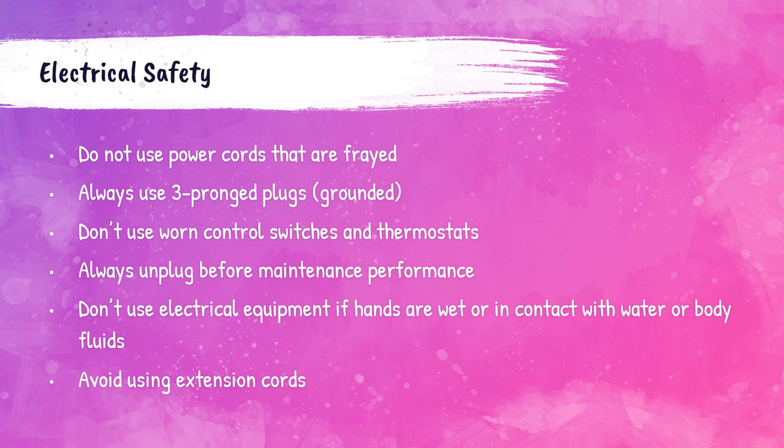Electrical hazards may be present within the laboratory. Power cords that are frayed or aging should not be used. Grounded plugs — those with three prongs — should always be used. Worn control switches or thermostats should not be used, and extension cords should be avoided. Before performing maintenance on any piece of equipment, it should be unplugged. If hands are wet or in contact with water or body fluids, electrical equipment should not be used until hands are dry.